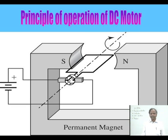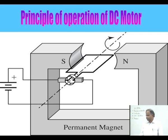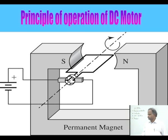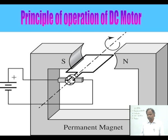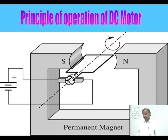The principle of operation of a DC motor basically involves a permanent magnet with north and south poles, and between these poles a coil is placed. This coil is connected to a commutator which is connected to a DC supply. When DC supply is given, current flows through the coil, which is placed in a magnetic field, experiencing a force that causes the coil to rotate, resulting in motion.